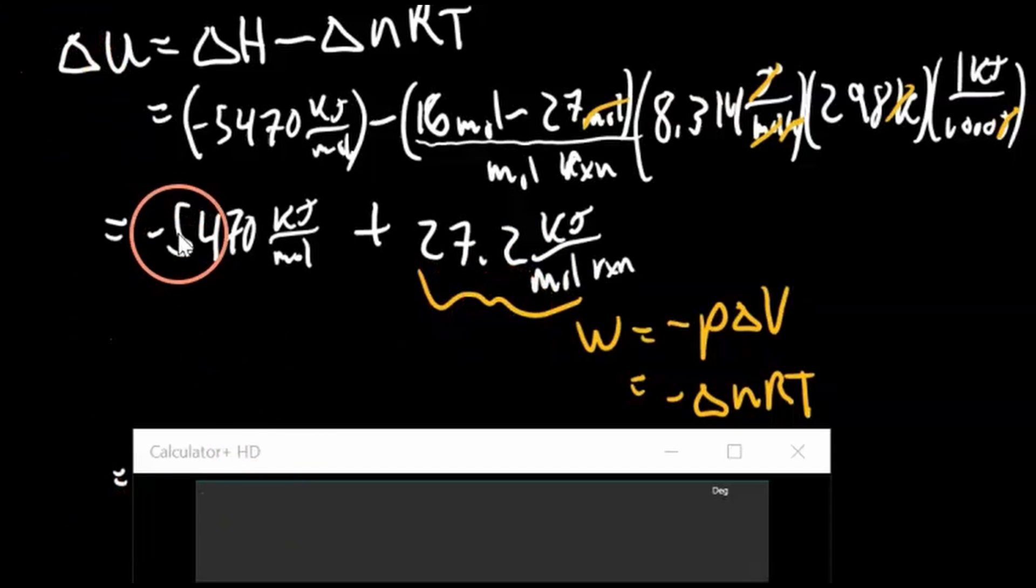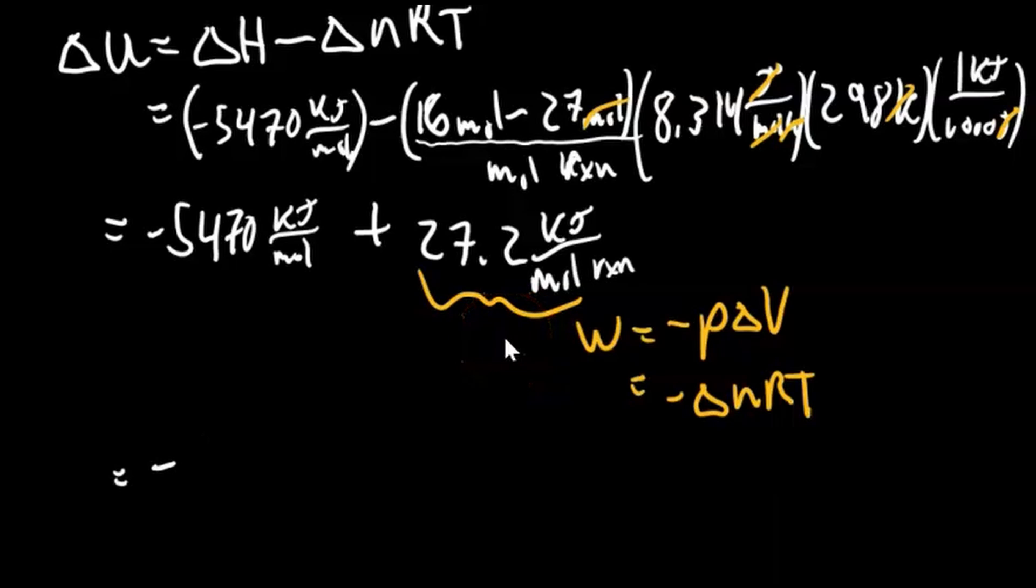Now we can add these two terms together: negative 5470 plus 27.2 is negative 5442.8. Negative 5442.8 moles of reaction, I'm going to write that in here, kilojoules per mole of the reaction.